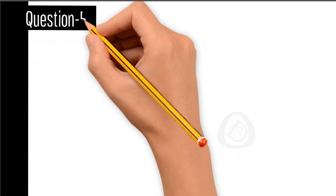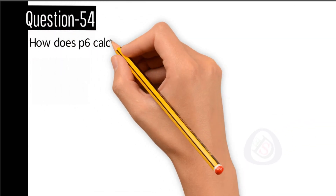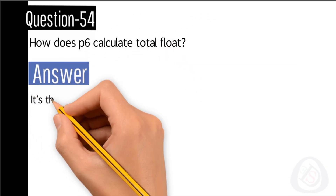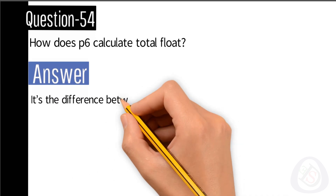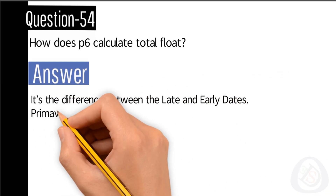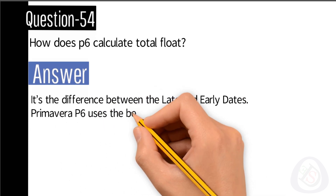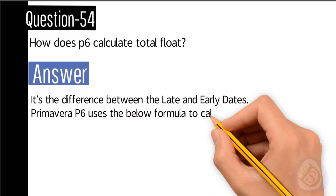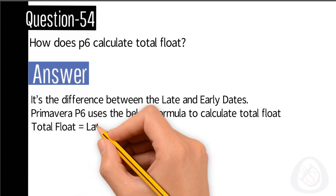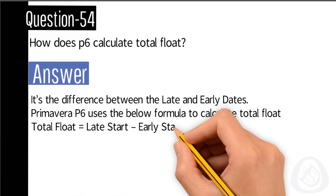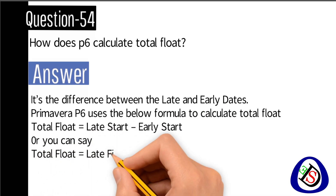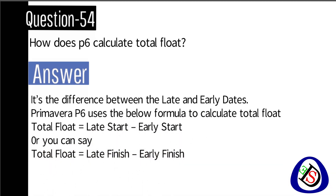Question number 54: how does P6 calculate total float? Answer: it is the difference between the late and early dates. Primavera P6 uses the following formula: total float equals late start minus early start, or total float equals late finish minus early finish.